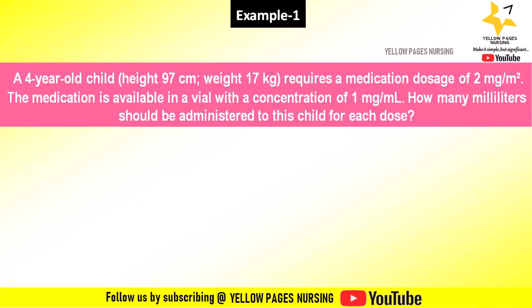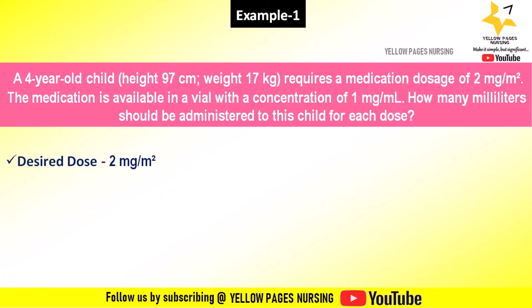Let's begin the calculation with an example. A four-year-old child with a height of 97 centimeters and weight of 17 kilograms requires a medication dosage of 2 milligrams per meter squared. The medication is available in a vial with a concentration of 1 milligram per ml. How many milliliters should be administered to this child for each dose? The desired dose is 2 milligrams per meter squared.